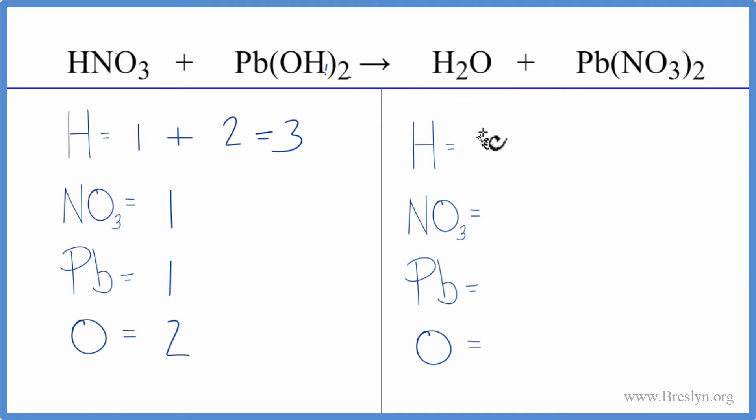On the product side, we have two hydrogens. We have one nitrate times two, so we have two of those, one lead, and then one oxygen.